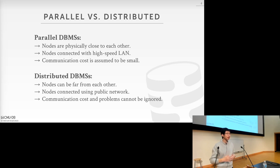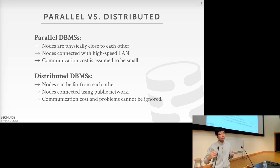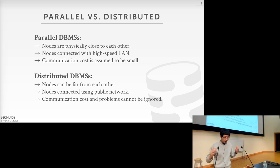In a parallel database, if one node is done, then the entire database is done — there's no failover. We also assume communication cost is small. But today we're going to talk about distributed databases, where we can arrange different nodes that are potentially very far away from each other. In a distributed database, nodes or partitions of data could come from different regions, even different continents — in a cloud, for example — and they would communicate using the public network, which means network latency could be really high.